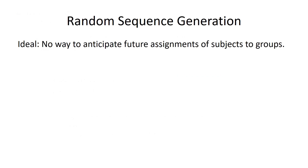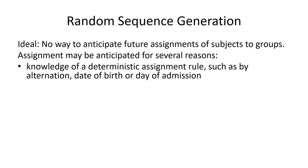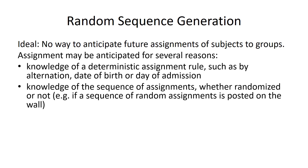The ideal for random sequence generation is that there's really no way to anticipate the future assignments of subjects to group. The researchers don't know — nobody could tell ahead of time who's going to get assigned to which group. The assignment could be anticipated for several reasons. For instance, the knowledge of a deterministic assignment rule, such as alternation: the first person that comes in is in one arm, the second person is in the next arm. The date of birth or the date of admission — any of these is going to let people know which arm the next person is supposed to be in.